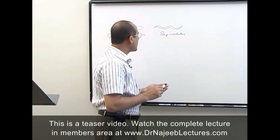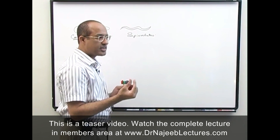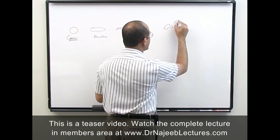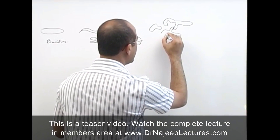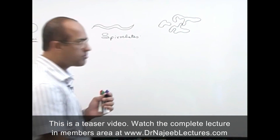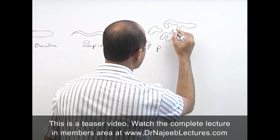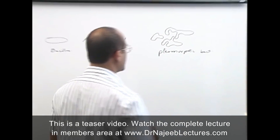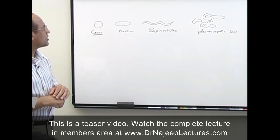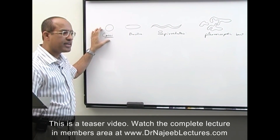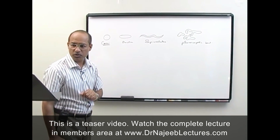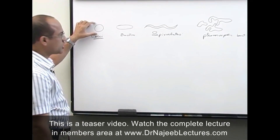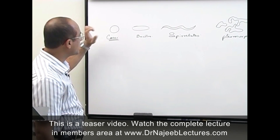There is another group of bacteria in which bacterial cells do not have any definitive shape. When bacterial cells have irregular shapes or not well-defined morphology, we call them pleomorphic bacteria. Now the question is: what is the main factor responsible for maintaining the shape of bacteria? The answer is the cell wall. Cell wall is responsible for maintaining the shape of bacteria.